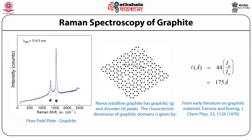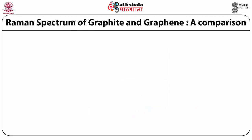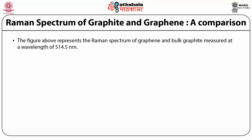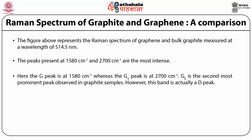Raman spectroscopy of graphite has been shown — specifically nano crystalline graphite, which shows the G and the disordered D peaks. The characteristic dimension of graphitic domains is given by a relation shown in the slide. The Raman spectrum of graphite measured at a wavelength of 514.5 nm shows the most intense peaks at 1580 cm⁻¹ and 2700 cm⁻¹. The G peak is at 1580 cm⁻¹ whereas the G' peak is at 2700 cm⁻¹.